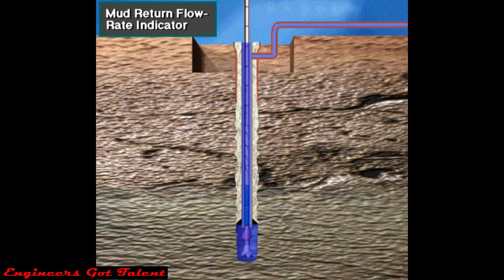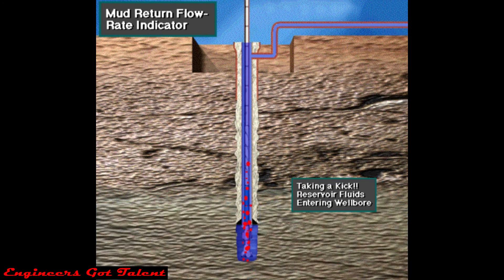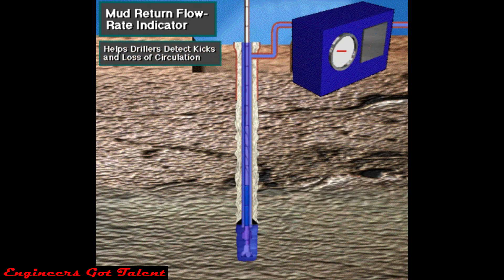A change in the return flow rate of the mud may indicate one of two things. If the flow rate decreases, mud may be being lost to a downhole formation. If the flow rate increases, formation fluids may have entered the hole and are forcing drilling mud out. So, a mud return flow rate indicator can help drillers detect kicks and loss of circulation.